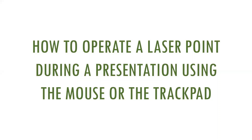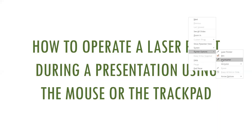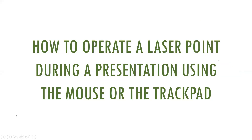The most essential condition for using a laser pointer is that your presentation must be in slideshow mode. Once slideshow mode has been activated, there are two ways to enable the laser pointer option. The first way is to right-click anywhere on the screen and go to pointer options, where you have laser, pen, and highlighter. The second way is to move to the left bottom corner of the screen and go to the third option, which has the same options as the right-click.